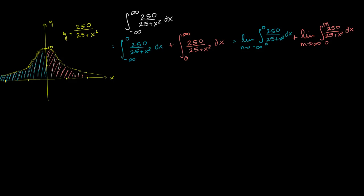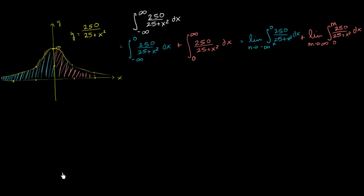Now all we have to do is evaluate these definite integrals, and to do that we just need to find an antiderivative of 250 over 25 plus x squared. It might already jump out at you that trig substitution might be a good approach. We see this pattern of a squared plus x squared, where in this case a would be 5.